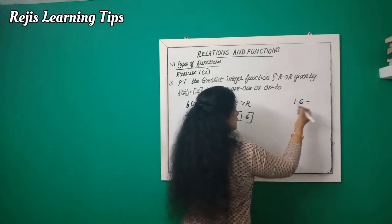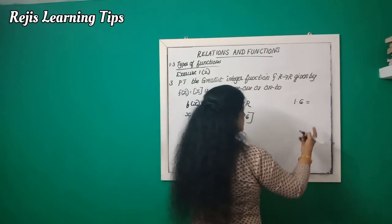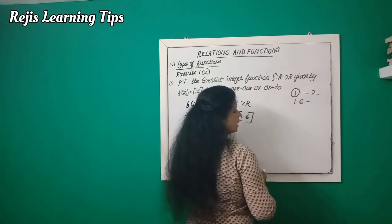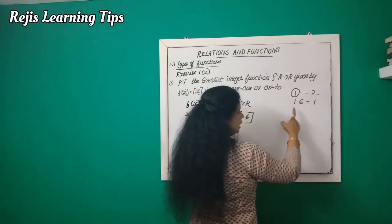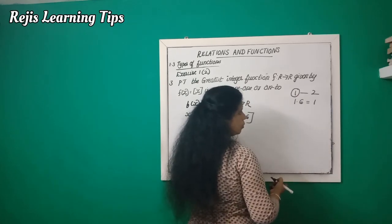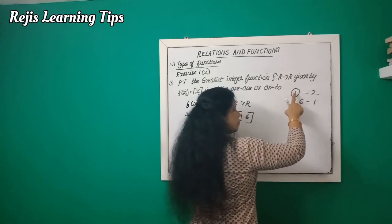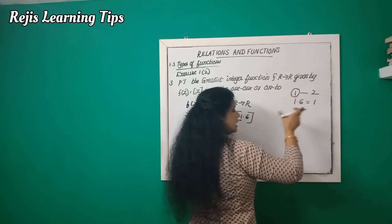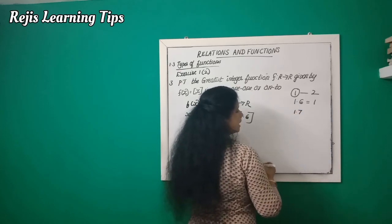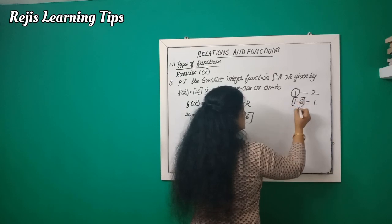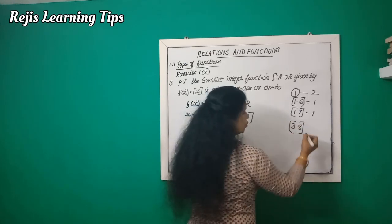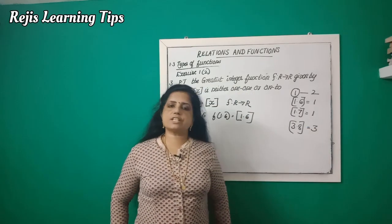For example, 1.6 lies between 1 and 2, so the greatest integer function of 1.6 equals 1. Similarly, 1.7 lies between 1 and 2, so the greatest integer function of 1.7 is also equal to 1. And 3.8 lies between 3 and 4, so the greatest integer function of 3.8 is 3.